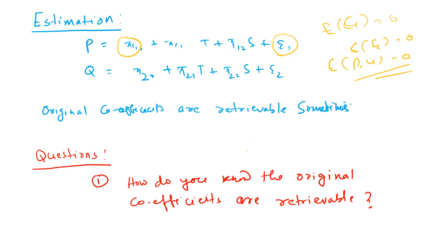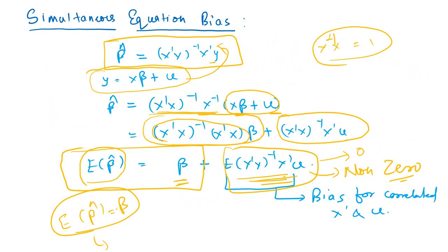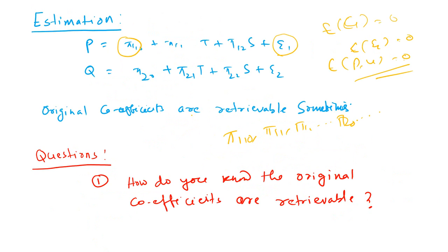But all you will be getting from estimating these two reduced form equations will be the values of pi-1-0, pi-1-1, pi-1-2, pi-2-0, and so on — not the original parameters, which were alpha, beta, mu, lambda, and others. These original coefficients are sometimes retrievable and sometimes they are not. The reduced form equation is only helpful for estimation, not for interpretation — and that is a problem. The question in front of you is: how do you know that the original coefficients are retrievable? And how do we know when it is not possible? That is the question.